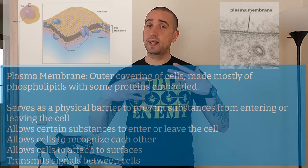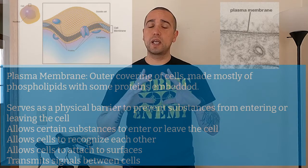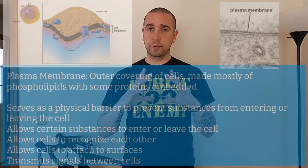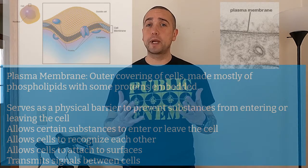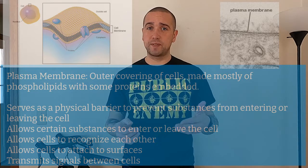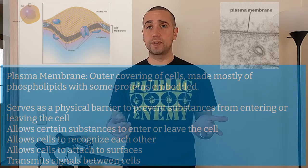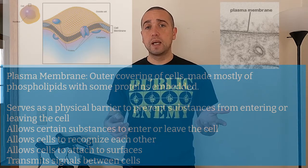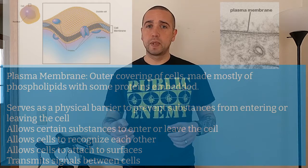The outer covering of a cell, just like the skin of the cell, is called the plasma membrane. The plasma membrane is mostly made of lipids, specifically phospholipids, but also some cholesterol derivatives, as well as proteins embedded in it.